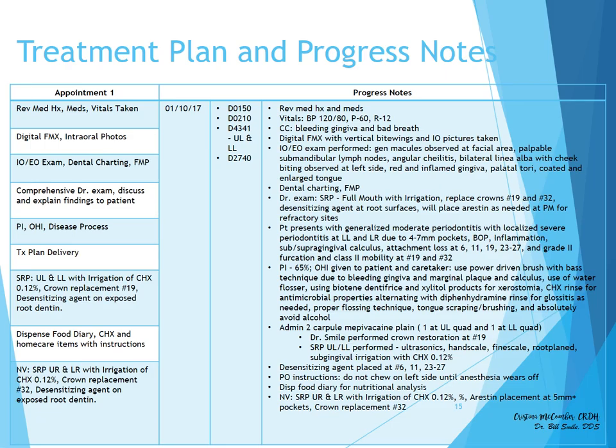A desensitizing agent is placed at root surfaces at 6, 11, and 23 to 27. Post-op instructions were given to not chew on the left side until the anesthesia wears off. At this appointment, we will dispense the food diary for the nutritional analysis. The next appointment will be the SRP of the upper right and lower right with irrigation and the crown replacement of number 32.